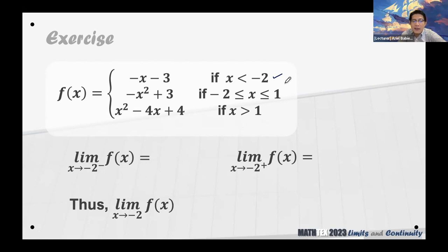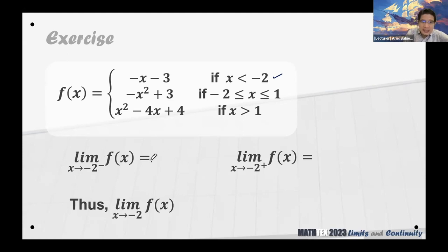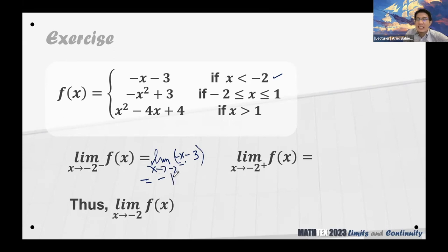What will be the limit of f(x) as x approaches negative 2 from the left? This will be the limit of negative x minus 3 as x approaches negative 2 from the left. Upon substitution of negative 2: negative of negative 2 is 2, and 2 minus 3 is negative 1. Just be very careful with all the negatives.